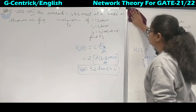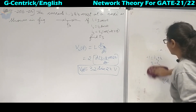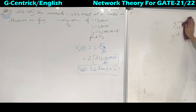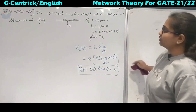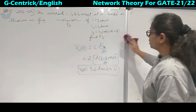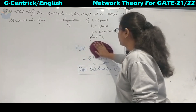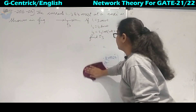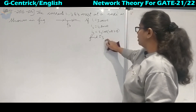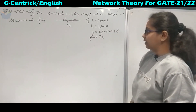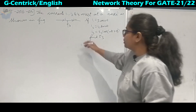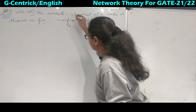Moving on to the next question: currents I1, I2, and I3 meet at a node as shown in the figure. They have a common node, and the values of I1, I2, and I3 are given. We need to find the magnitude of I3. We will apply KCL at this node, calling it node A.